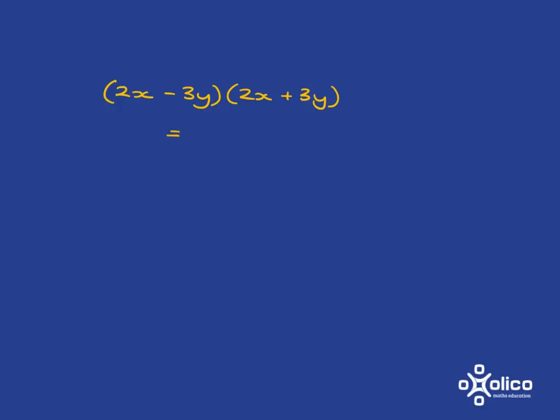If we've got this, where we've got the same thing here, the only thing that's different is this has got a minus and this is a plus, we're going to get out a difference of 2 squares. So the first term is going to be 2x squared, and it's a difference, so minus, and then our last term will be 3y squared.